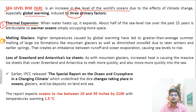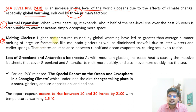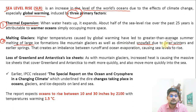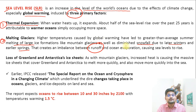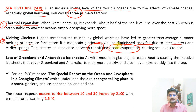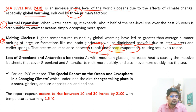The second factor is melting of glaciers — if glaciers melt due to rising temperatures, there will be a rise in sea level automatically. Large areas of ice and snow melting lead to the diminishing of glaciers, changing the seasonality and seasonal patterns such as snowfall due to later winters and earlier springs. This also leads to an imbalance between runoff and ocean evaporation: if there is more runoff and less evaporation, the imbalance leads to sea level rise.